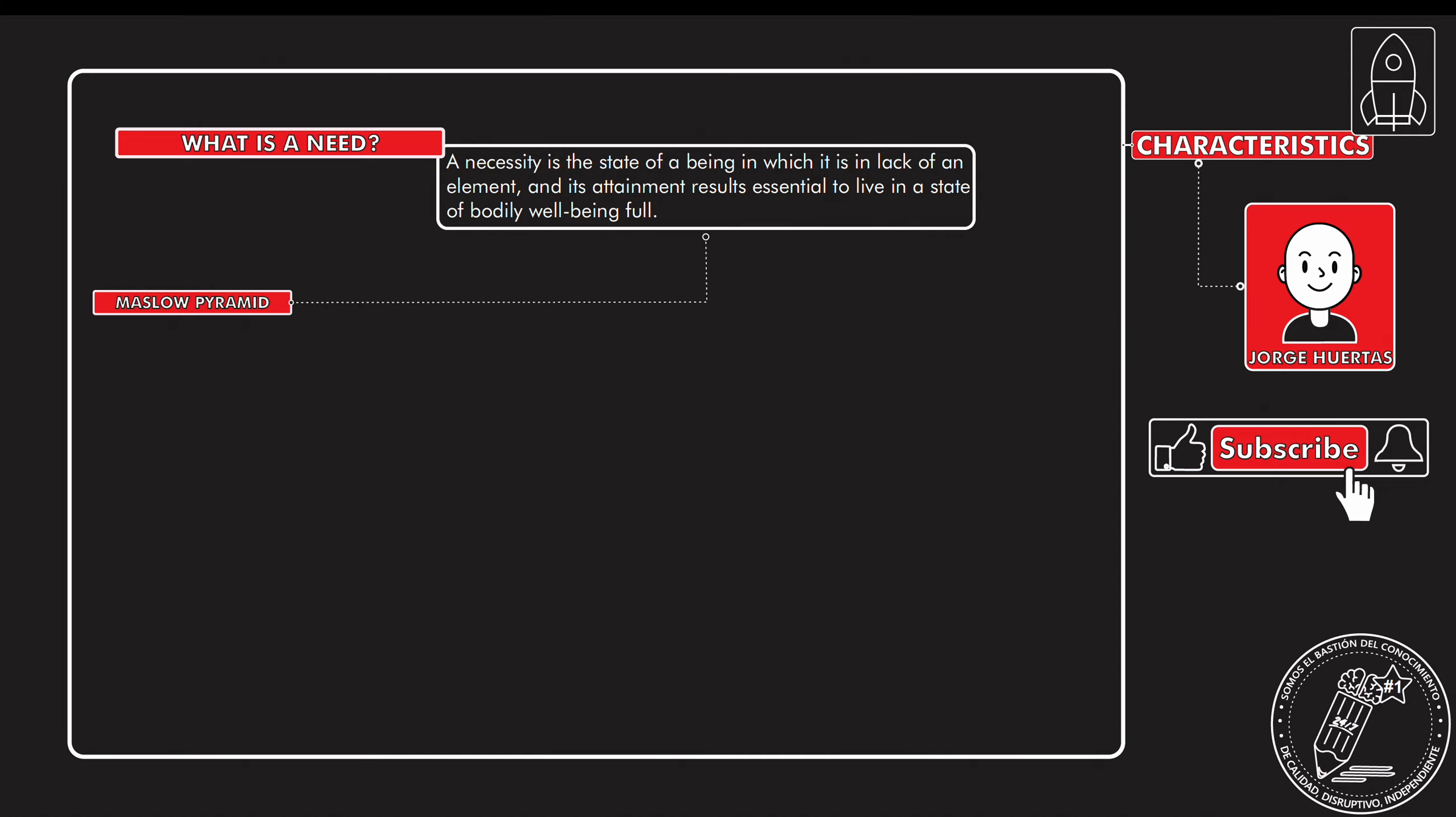So the Maslow pyramid is a tool that basically allows you to understand what needs are more important than others and what kind of needs each person has. So basically we got five stages.